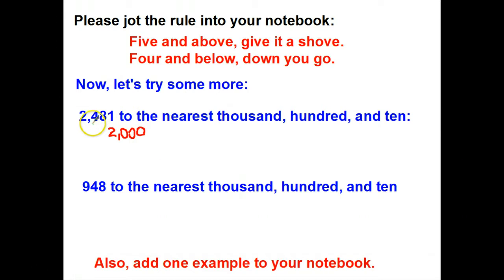What about the nearest hundred? Well, here we have a four in our hundreds place, so let's underline that and look to the right, which there is an eight. So five and above, give it a shove, this is actually going to round to 2,500.